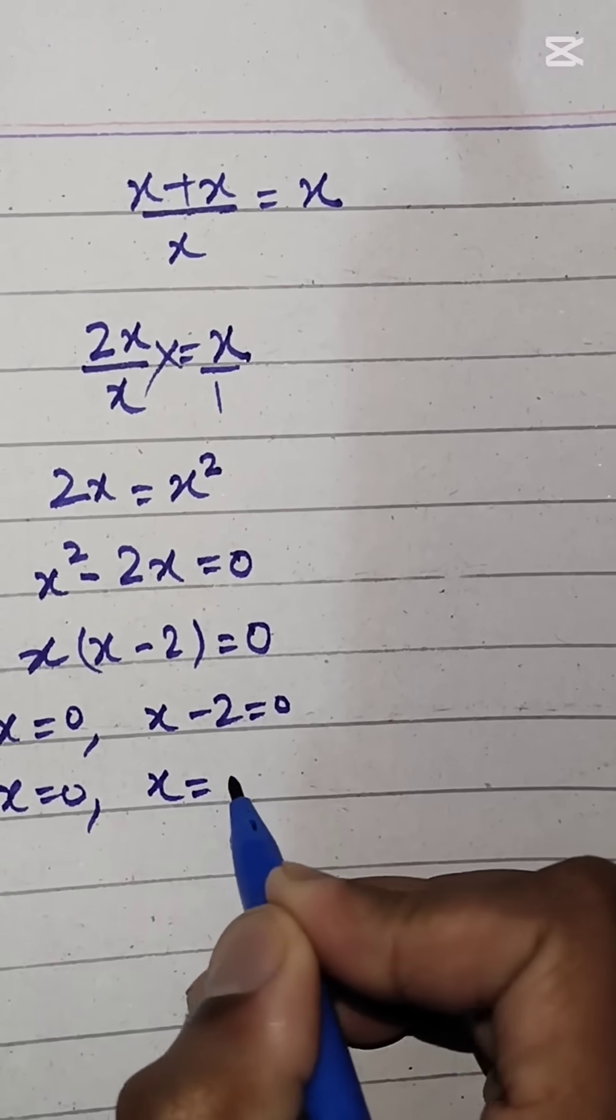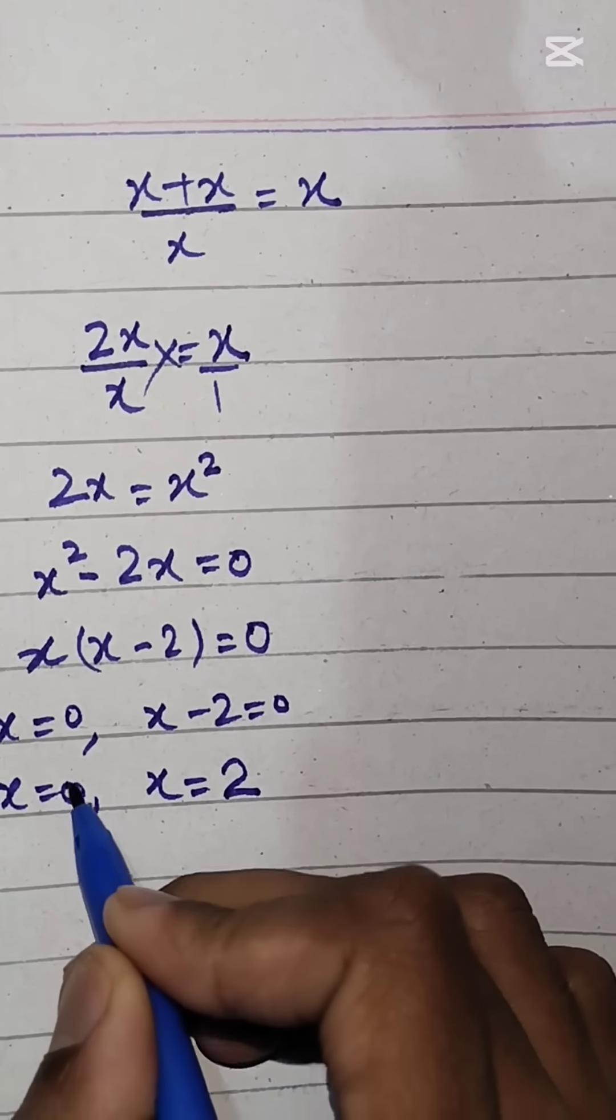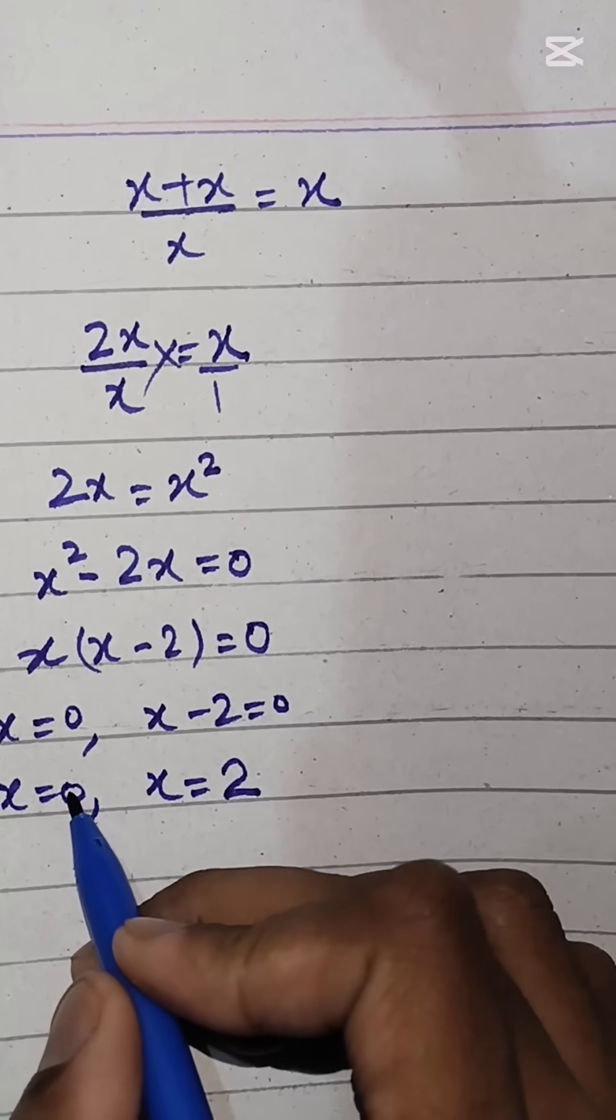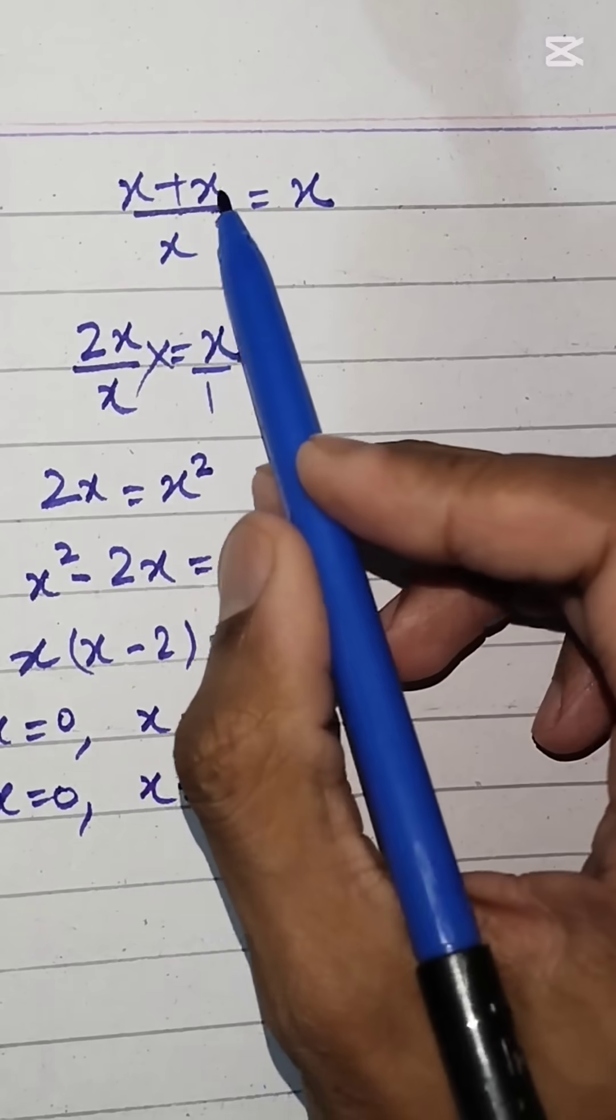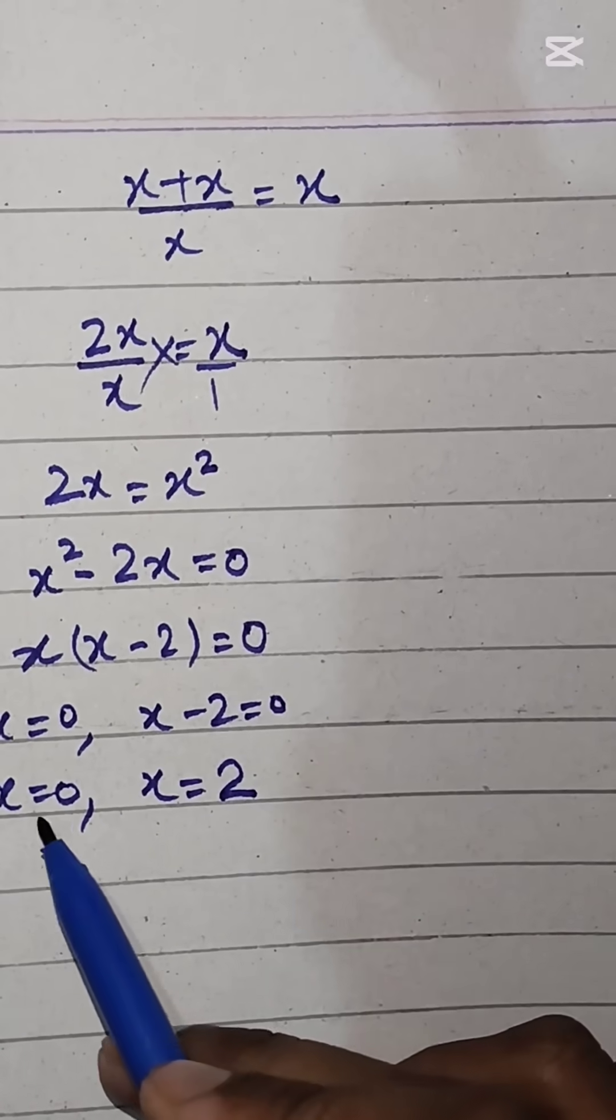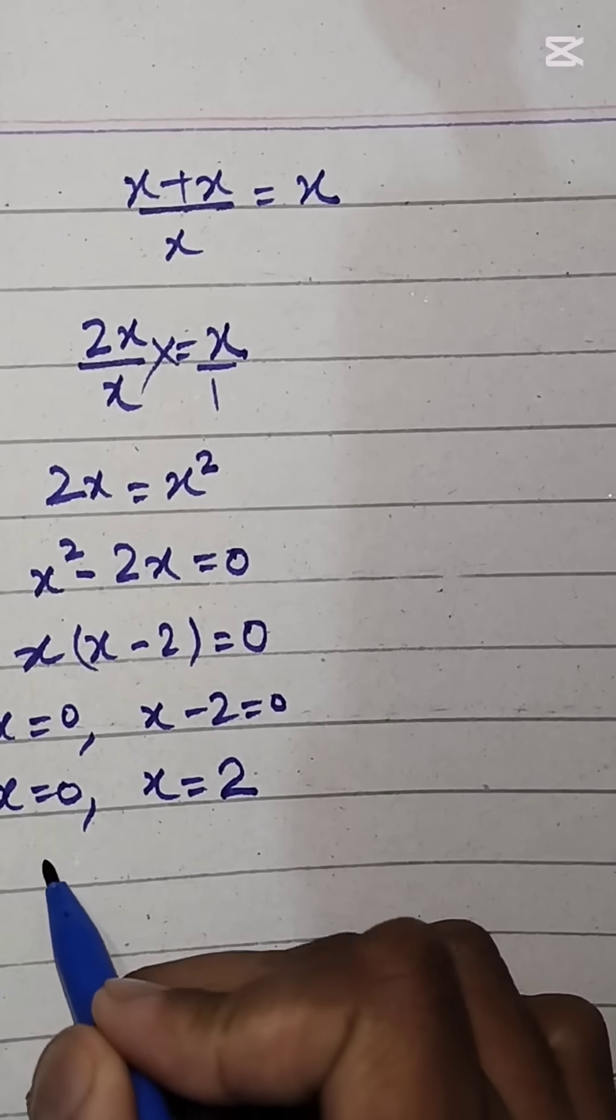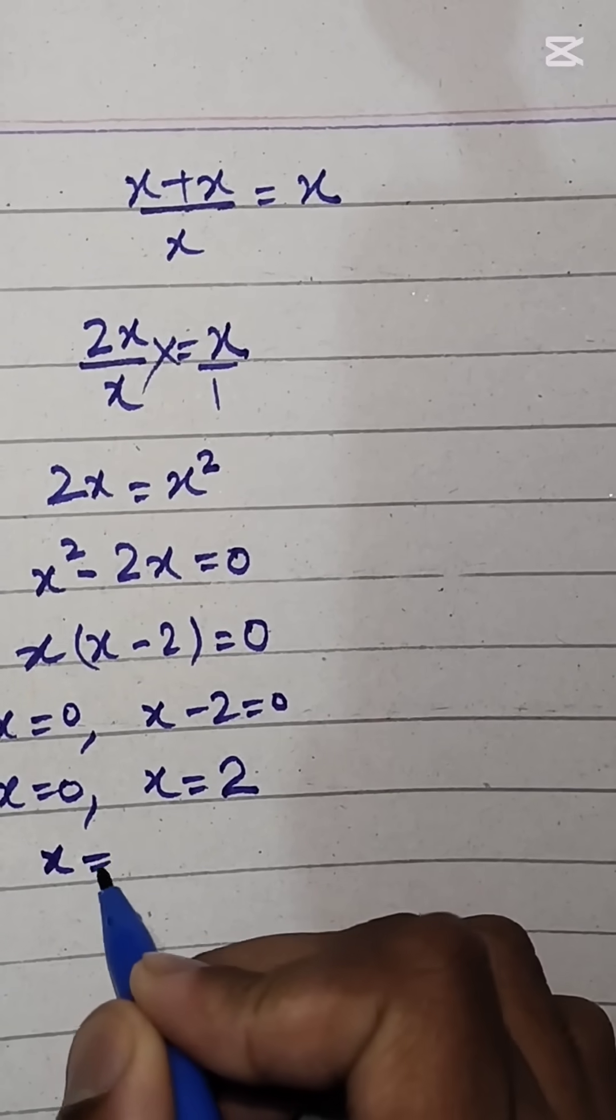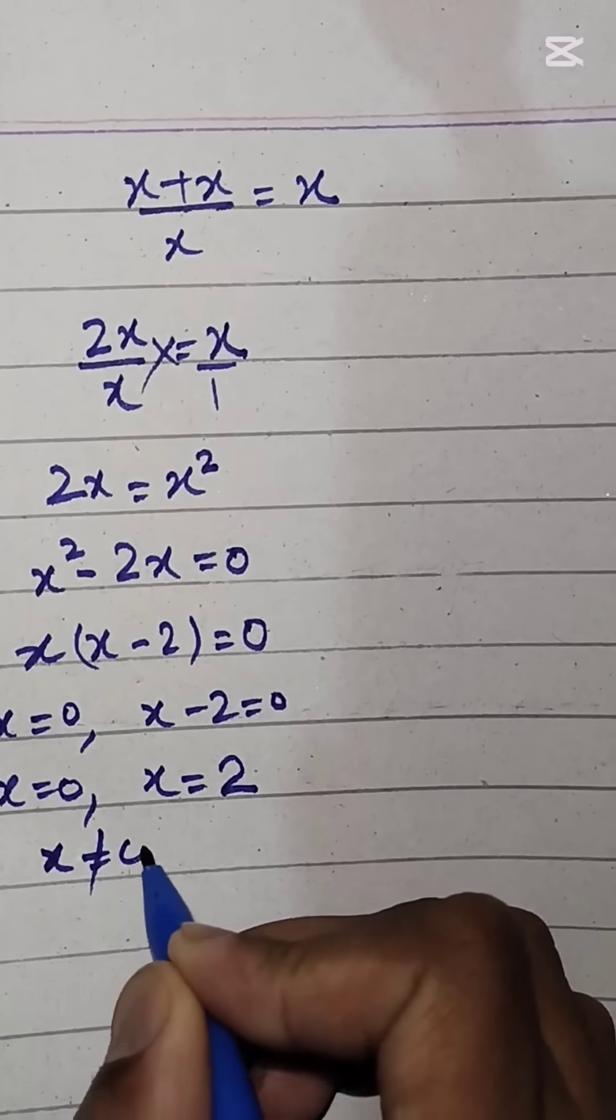But for this value x equals 0, we have 0 plus 0 over 0, so no solution exists for x equals 0. That is, we have no value at x equals 0.